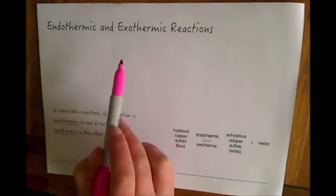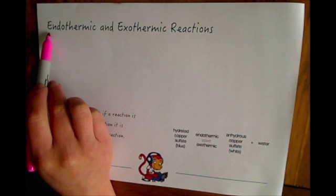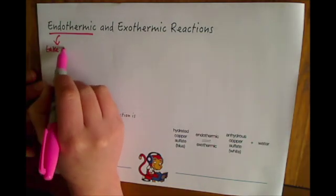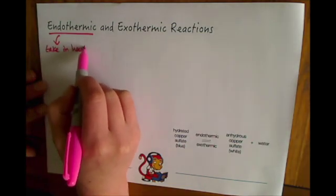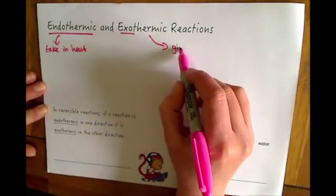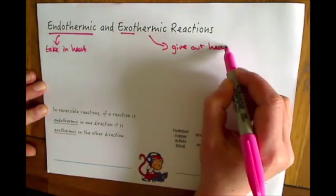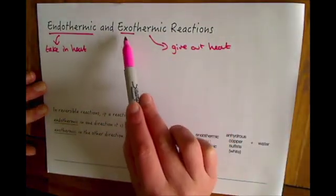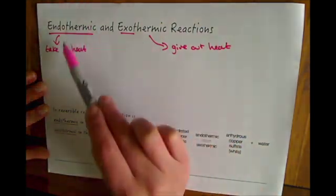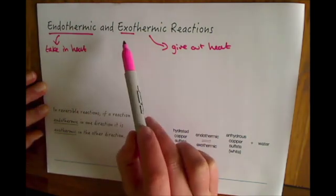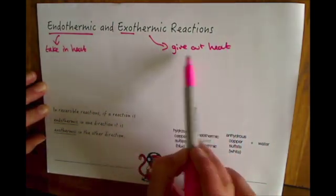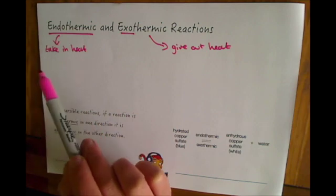Endothermic reactions are ones that take in heat from the environment, and exothermic reactions give out heat. Some people like to think of exo like exit—you go out of an exit so you're giving out heat, and endo is the opposite. So exothermic reactions give out heat and endothermic ones take in heat.